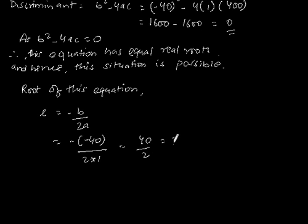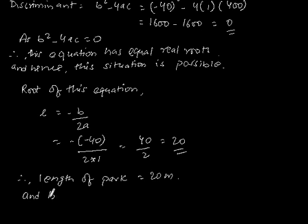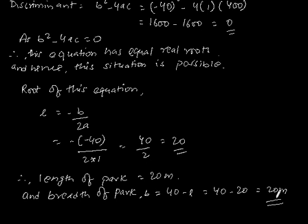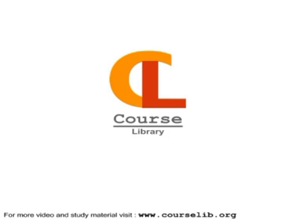Therefore, length of the park is 20 meters. And breadth of the park, B = 40 - L = 40 - 20 = 20 meters. So the length and breadth of the park are both 20 meters.